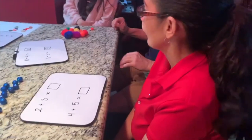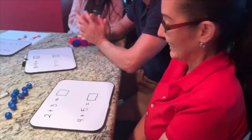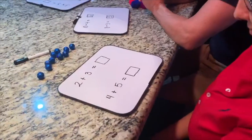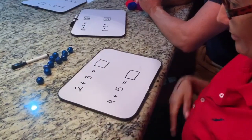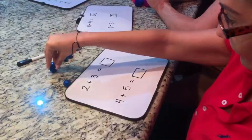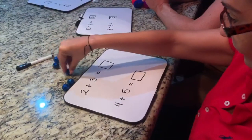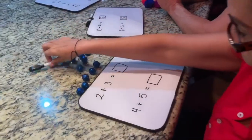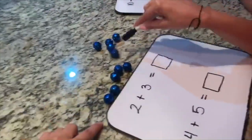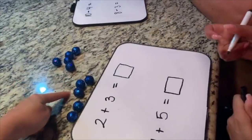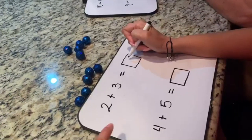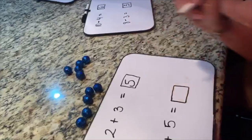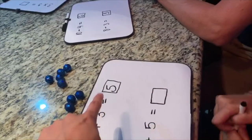Lastly, my student Evelyn will show you how to use math manipulatives to conduct addition problems. She will now show you 2 plus 3 using her math manipulatives. So now by setting up a group of 2 and a group of 3, she is using one-to-one correspondence, showing that 2 represents 2 balls and 3 represents 3 balls. And by counting them all, she comes to her answer.